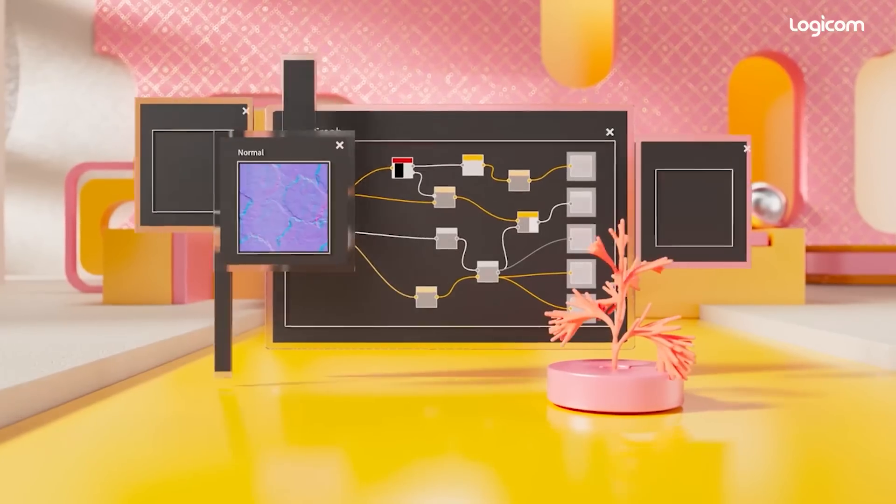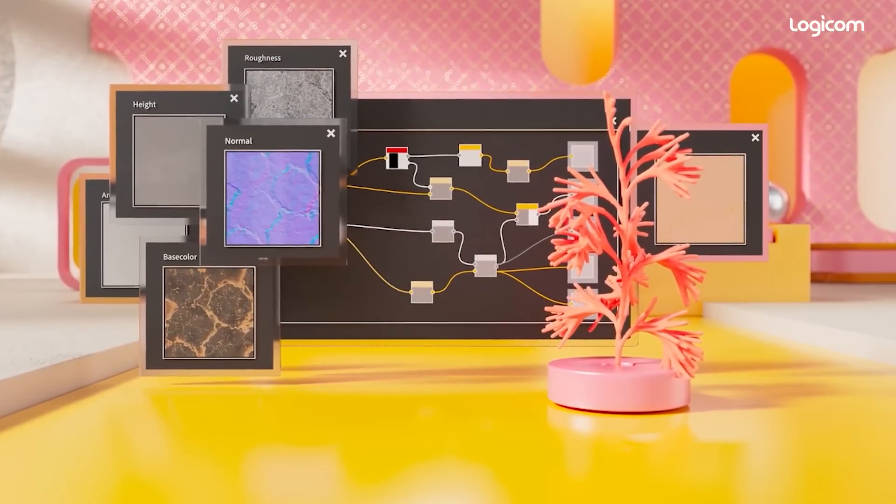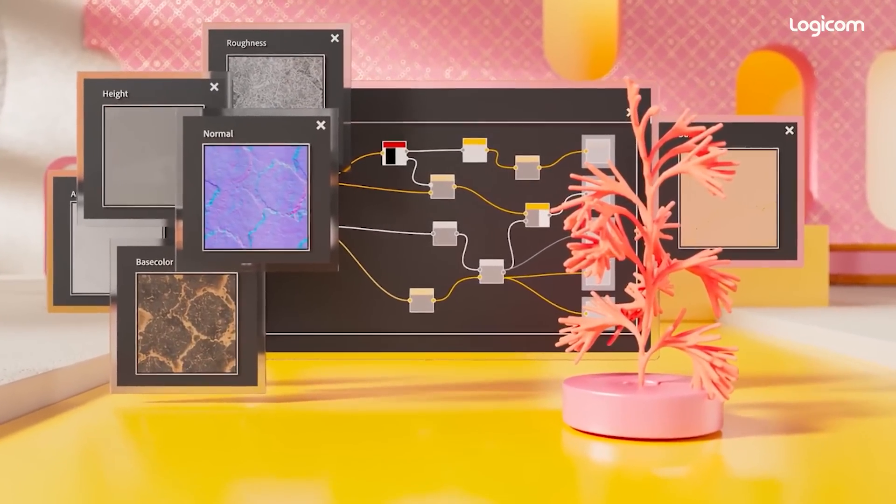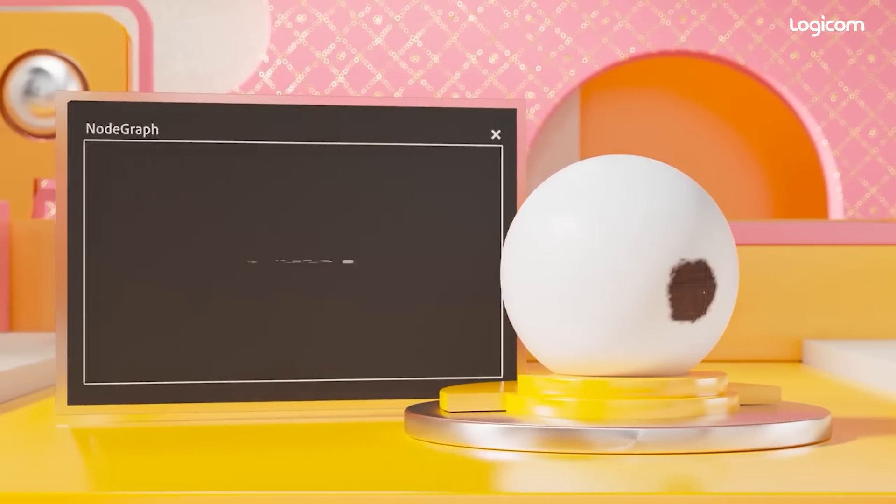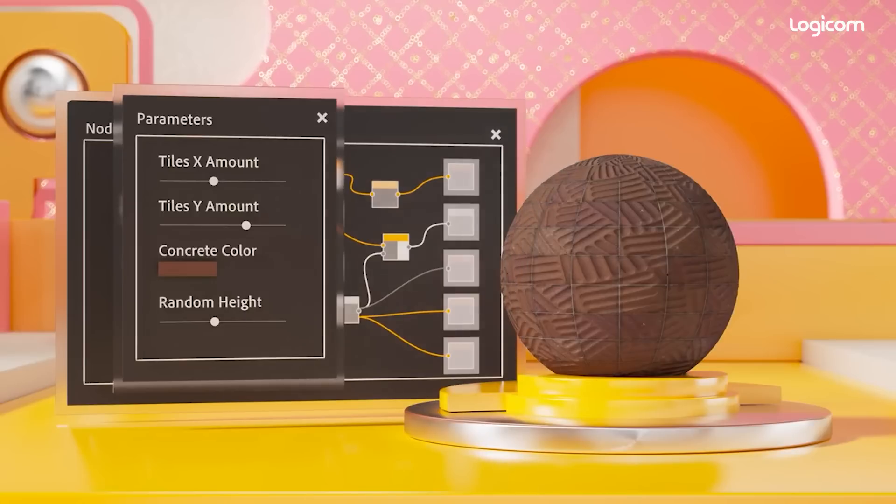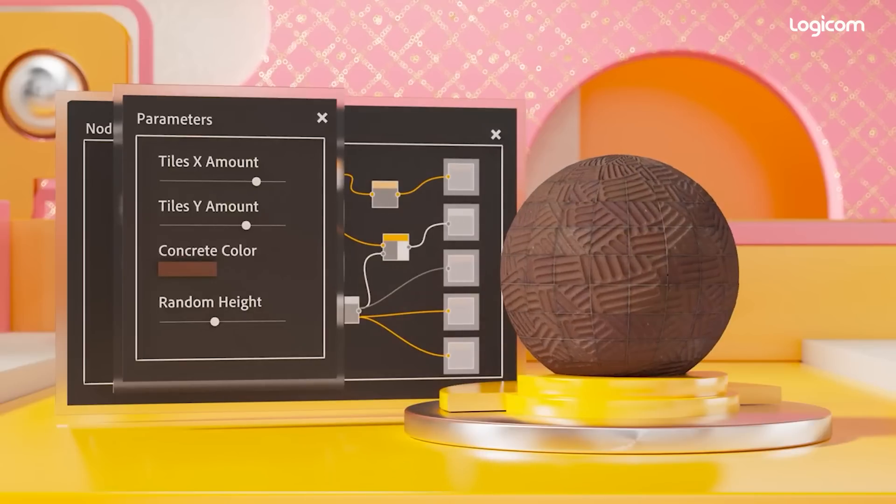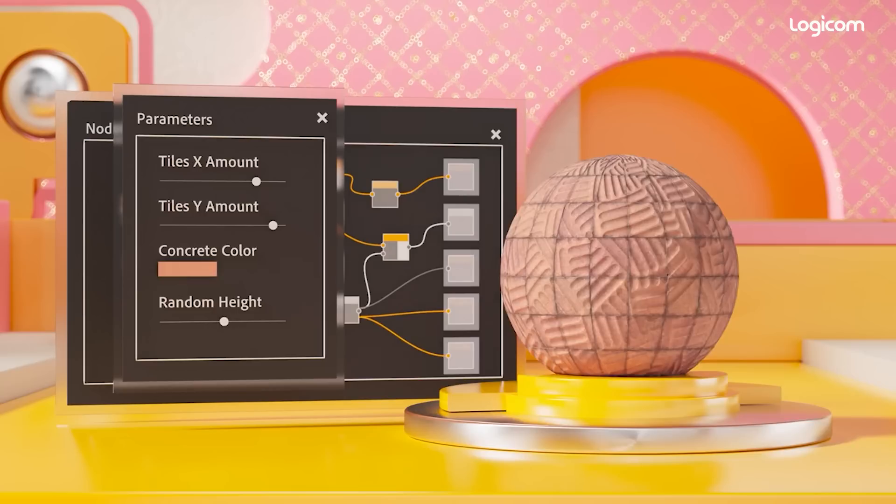Creating graphs in Substance 3D Designer offers an efficient and dynamic way of making content. Creating a pattern by hand might be faster if you do it just once, but with graphs, you can tweak it infinitely by using parameters, little controls that change the results on the fly.